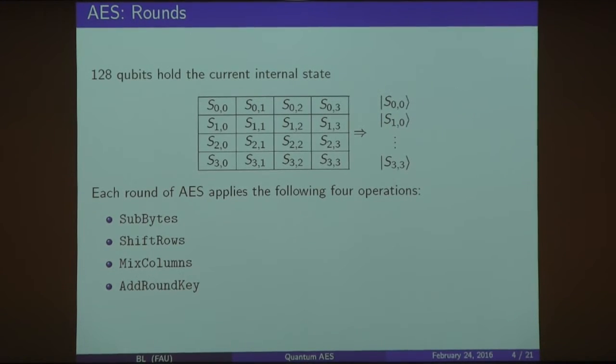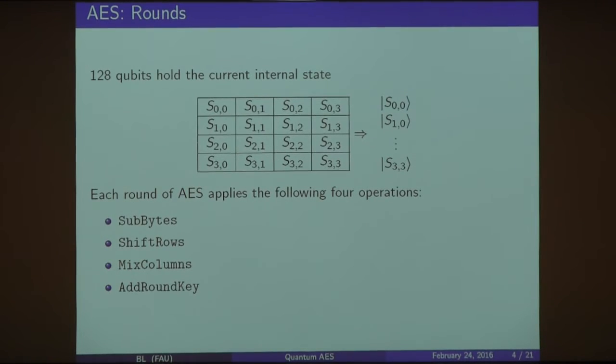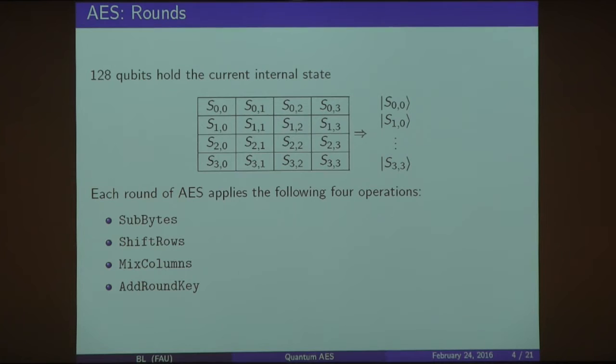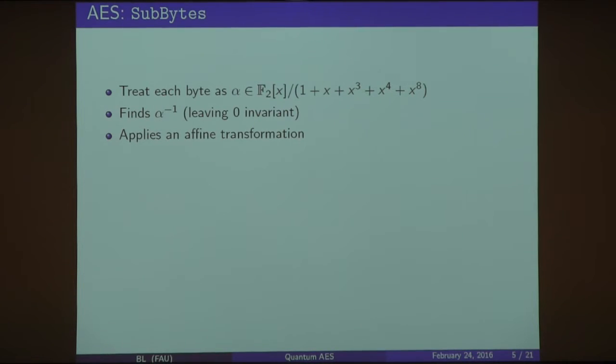For the AES rounds, the internal state is treated as 128 bits or qubits held in a four by four array of each byte. What happens in each round of AES, the four following operations are applied: SubBytes, which affects each byte one at a time and is the most costly of the ones that we had to implement, so I'll spend most of my talk discussing that. ShiftRows, which affects each row at a time, MixColumns affects each column at a time, and then AddRoundKey affects the overall state at one time.